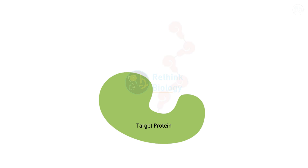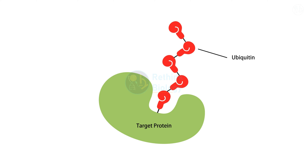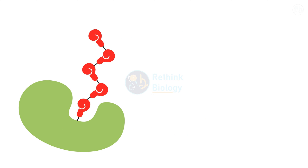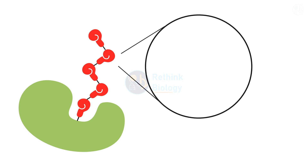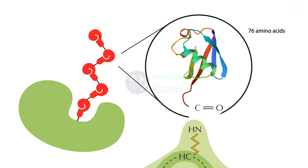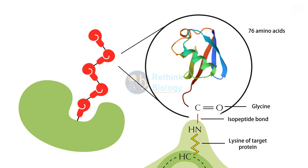Ubiquitylation involves the attachment of a small protein called ubiquitin to a target protein. Ubiquitin is a 76 amino acid protein with a globular shape and a flexible tail. The tail contains a glycine residue at the end which can form a covalent bond with a lysine residue on another protein. This bond is called an isopeptide bond, and it links the carboxyl group of ubiquitin to the amino group of lysine.